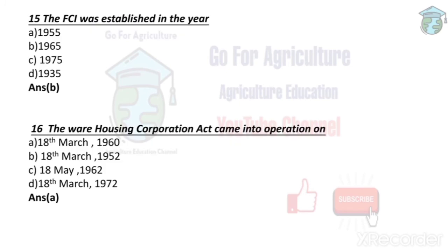The FCI — Food Corporation of India — was established in the year 1965. From question 15 onwards, the remaining questions are completely based on years only, and these are really important for competitive exams.